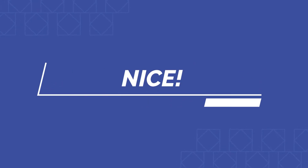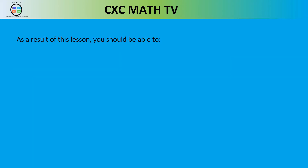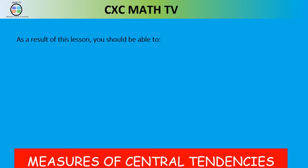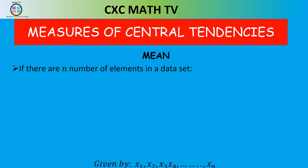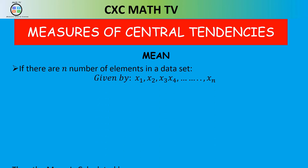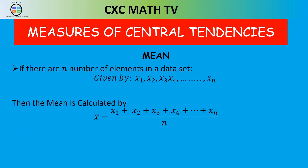Now let's review how to find the mean. Whenever you're given a raw data set, you just add up all the numbers and divide by the total amount of numbers. So for the set X₁, X₂, X₃ up to Xₙ, the mean is the sum of all the numbers divided by n, because there are n terms.